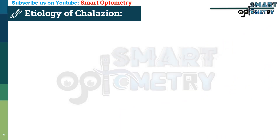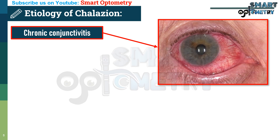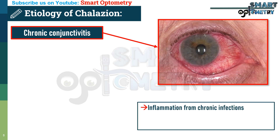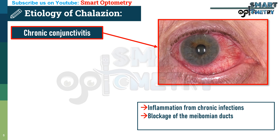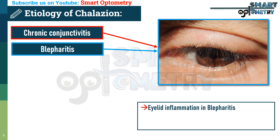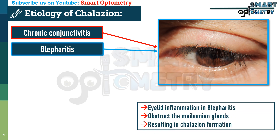What are the causes of chalazion formation? First, chronic conjunctivitis: persistent inflammation from chronic infections like trachoma can cause scarring or blockage of the meibomian ducts, leading to chalazion. Second, blepharitis: chronic eyelid inflammation in blepharitis can obstruct the meibomian glands, resulting in gland secretion buildup and chalazion formation.